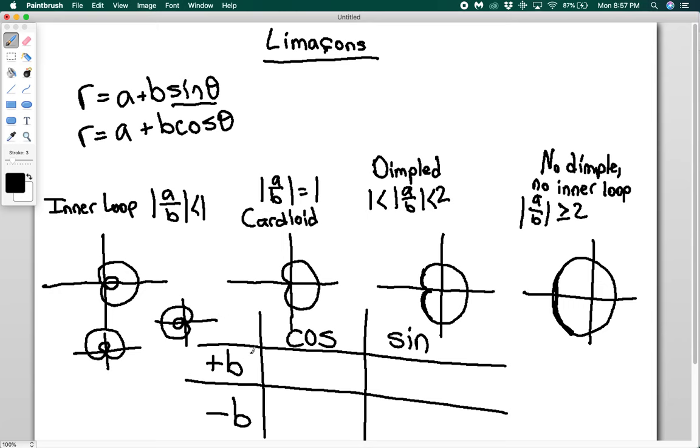So if you have a positive B and we have a cosine, then your limason is going to be to the right of the theta equals pi over two line. So these are all positive limasons. If we have sine and positive B, it's going to be above the polar axis.